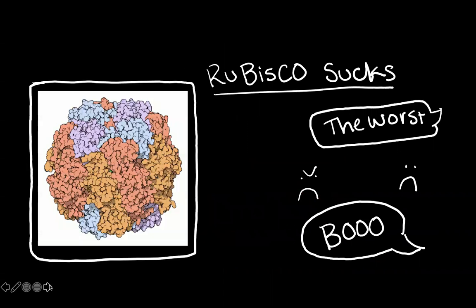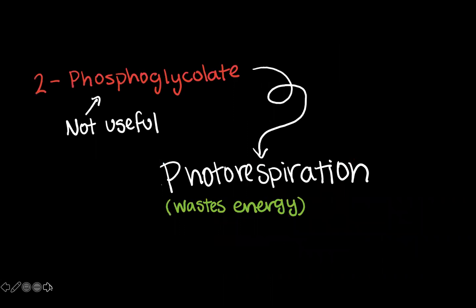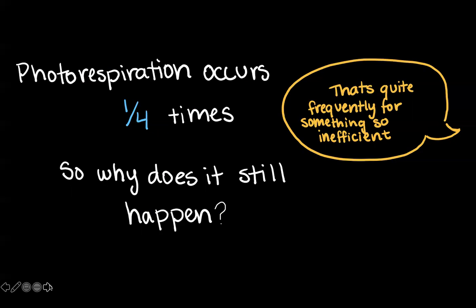And it's a really disappointing and bad enzyme. This oxygenase part of its name refers to when it uses oxygen instead of carbon dioxide in the reaction, and that makes a molecule called phosphoglycolate. Phosphoglycolate is not useful, so the chloroplast has to use photorespiration to get rid of it, and photorespiration wastes energy. The bad thing is that it occurs one out of four times that rubisco catalyzes the reaction, which is really frequently for something so inefficient.